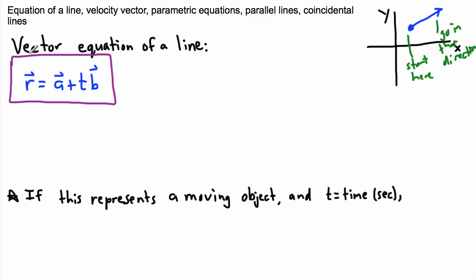What does this represent? Right over here we call this one 'a' — this is called your position vector, and this is where you start. We could make a vector going from the origin to the start point, let's say called capital A. That vector gets me from the origin to that point — that's the vector that gets me where I get started.